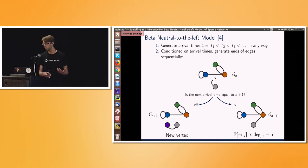On the other hand, if we're due to connect to an existing vertex, we're going to use a rule much like preferential attachment. So it's based on the degree of the node, but then compensated by this parameter alpha. So this is again a form of the rich get richer. We're more likely to connect to highly connected existing vertices. So these are beta-neutral to the left models, and we're going to try and do inference on these and unlock ways to model this linear sparsity regime.